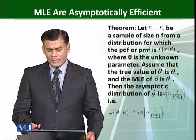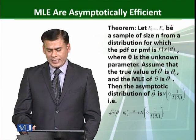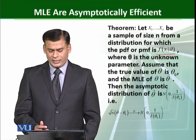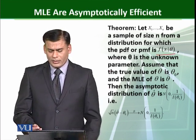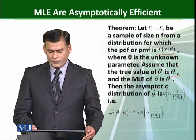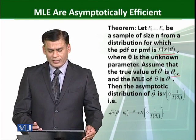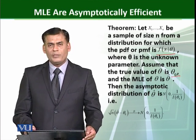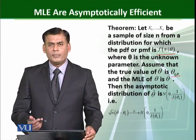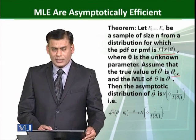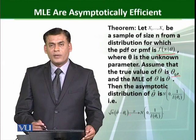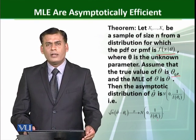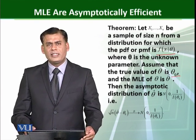The theorem: Let X1 up to Xn be a sample of size n from the distribution having probability density function or probability mass function f of x theta, where theta is unknown. Assuming the true value of theta is theta naught and the MLE of theta is theta hat, then the asymptotic distribution of under root n times (theta hat minus theta naught) approaches the normal distribution with mean 0 and variance 1 over I of theta, where I of theta represents the Fisher information.